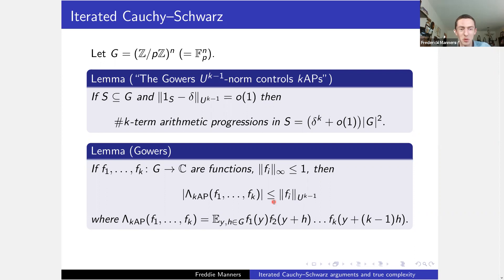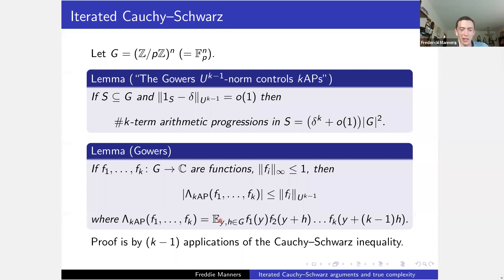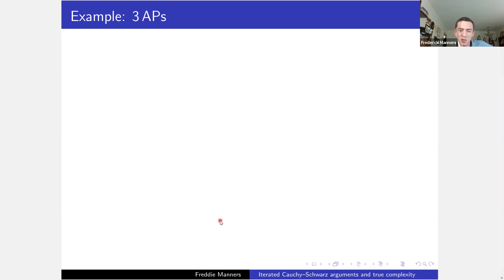The sort of inequalities I'm going to care about are ones of this form, where I have some multilinear average—such as this multilinear average over k-term progressions—and I want to bound it above by some other multilinear average. In this case, the multilinear average which is the definition of the Gowers norms with some exponent. I'll take it as given that everyone agrees this is useful.